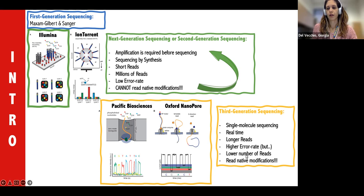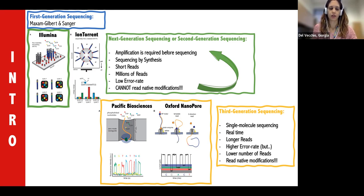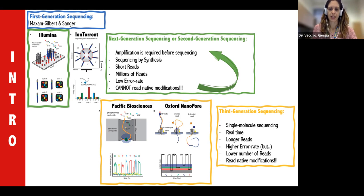The main difference between second and third generation sequencing is that third generation can read native modifications. For DNA, that's 5-methylcytosine — DNA methylation. For RNA, for example, N6-methyladenosine modification. That's something that can be important depending on your experiment.